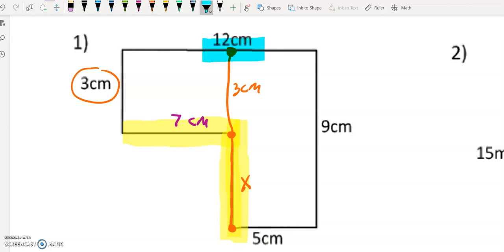I also know that from this line, the top line, all the way to the bottom line is going to be 9 centimeters. So using that information, I know that from this side to this side is going to be 9 centimeters.